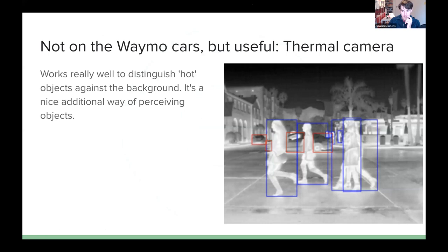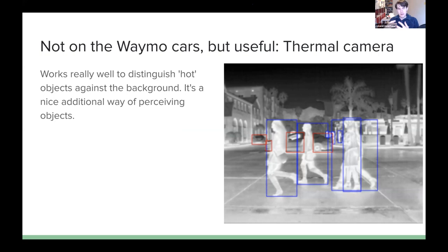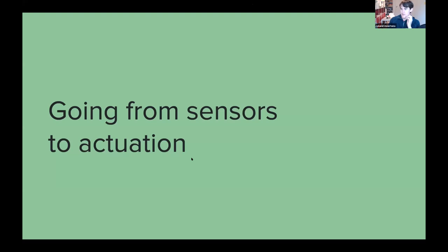One other sensor worth mentioning for robotics is a thermal camera. Thermal cameras give you an estimate of the temperature of objects. If you have a robot deployed in a dark environment, normal cameras might be a problem, but humans are always roughly the same temperature so they always stand out against the background. If you're building a robot that drives at night or needs to detect pedestrians at night, think about a thermal camera as a nice additional way of perceiving objects.